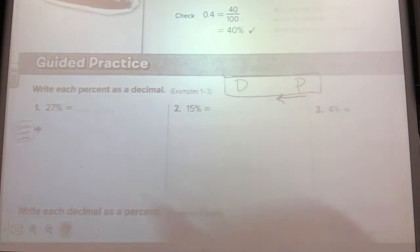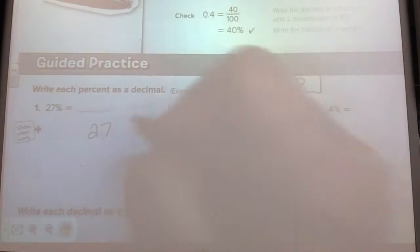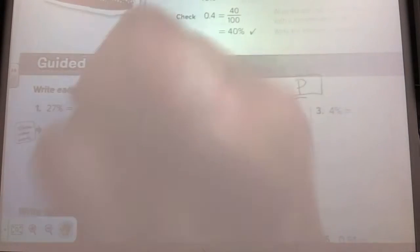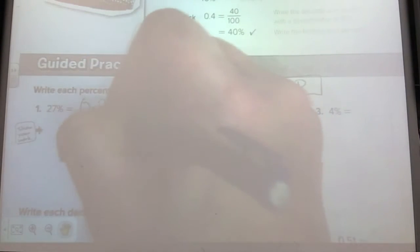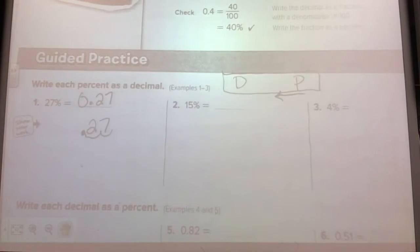So just write 27, go to the left one, two. Your answer: 0.27. Point two seven would be fine as well, but I always put that zero in front of it just so there's no confusion on having a whole number.